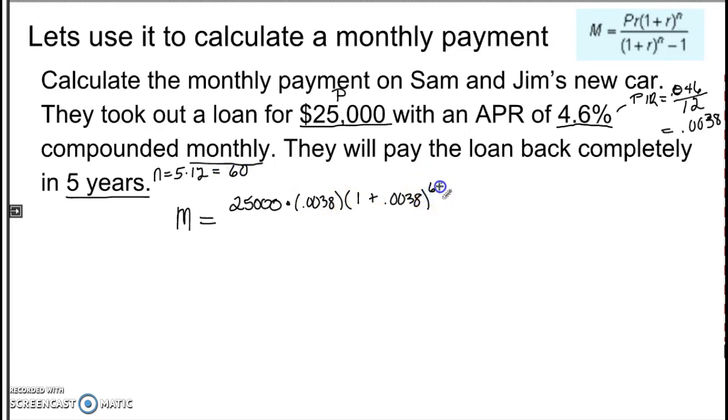So N would be 60. Again, our rate is 0.0038 raised to the 60th power minus 1.